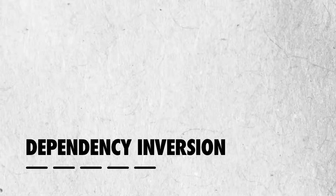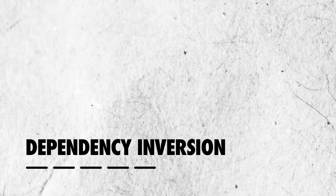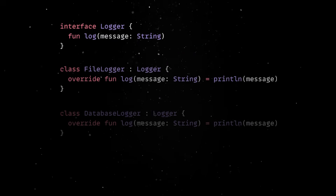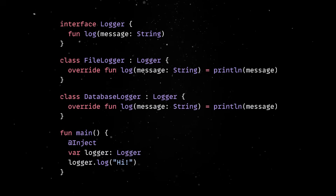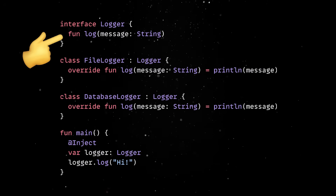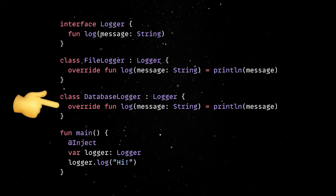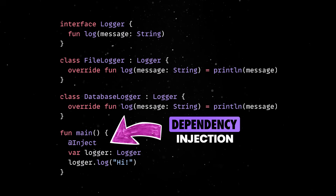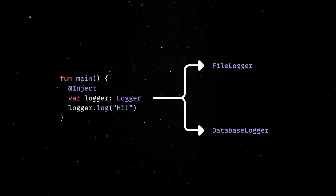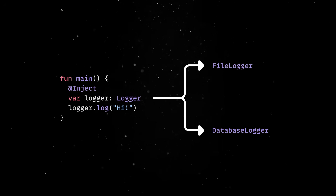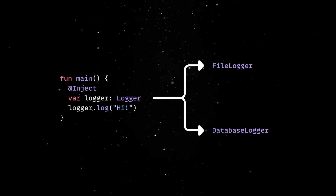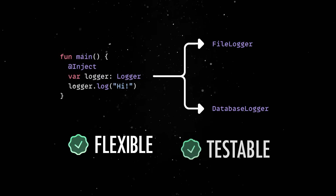Finally, the Dependency Inversion Principle states that high-level modules should not depend on low-level modules — they should both depend on abstractions. A classic example is logging: instead of a class directly calling a concrete file logger implementation, you'd depend on an abstraction like a logger interface. This allows you to easily swap out the logging implementation — for instance, to a database logger — without changing your high-level business logic. Dependency injection frameworks facilitate this by managing the creation and binding of abstractions to their concrete implementations, which not only improves flexibility but also makes unit testing much easier.